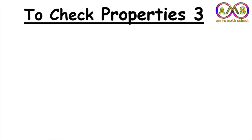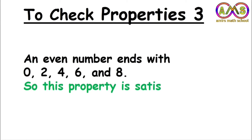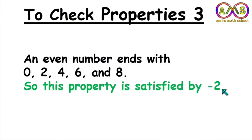Let's check Property 3: an even number ends with 0, 2, 4, 6, or 8. For minus 2, this number ends with 2. So we can say this property is also satisfied by minus 2. We can say minus 2 is an even number. With the help of these 3 properties, we can say minus 2 is an even number.